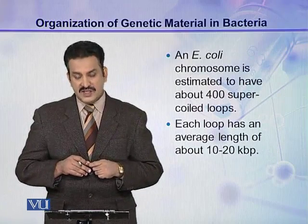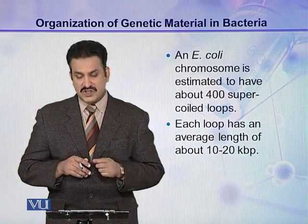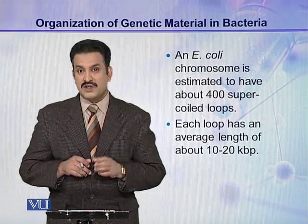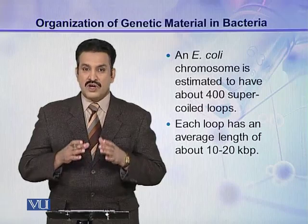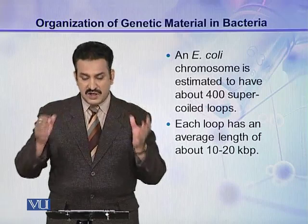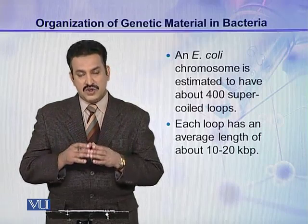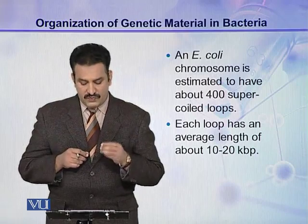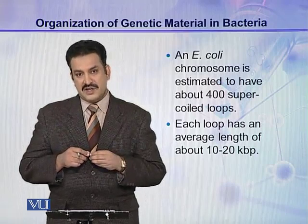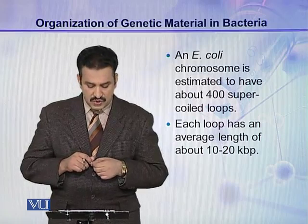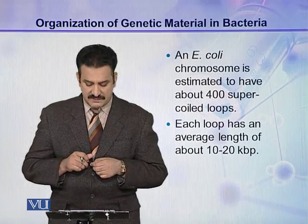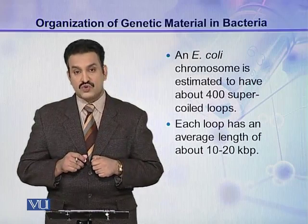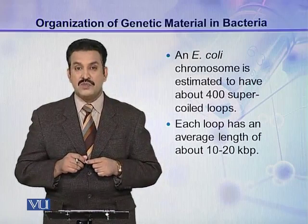An E. coli chromosome is estimated to have about 400 supercoiled loops. So a single molecule of DNA in E. coli is supercoiled into 400 loops, and each loop has an average length of about 10 to 20 kilobase pairs.